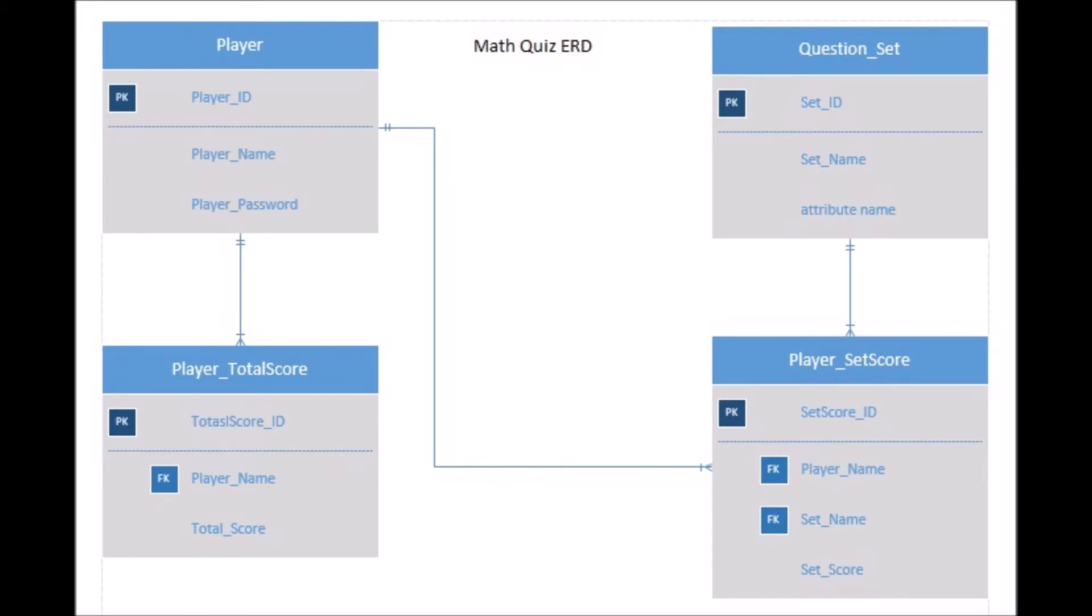The score is also updated to the player total score to make it easier to display another set of scores. It is the same as player set score table, but I used player total score score ID as the primary key and the player total score.